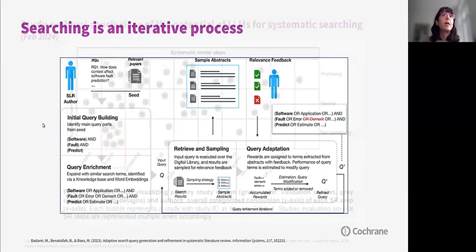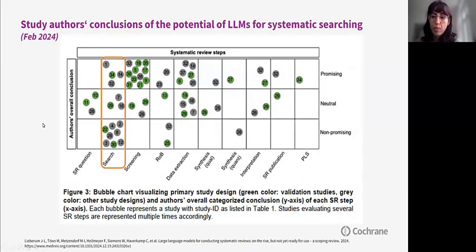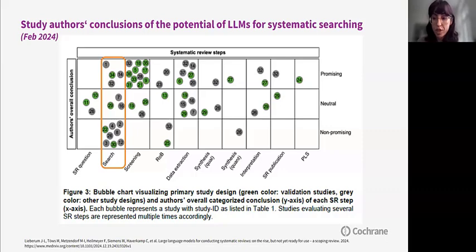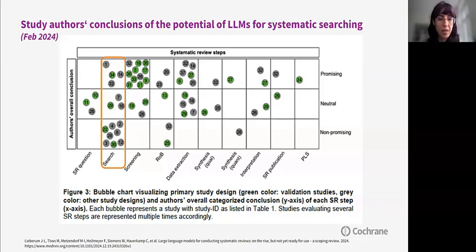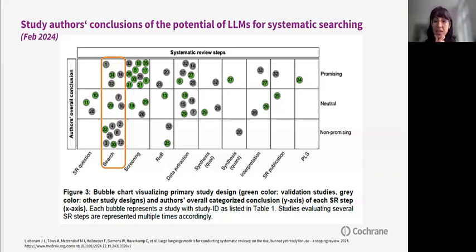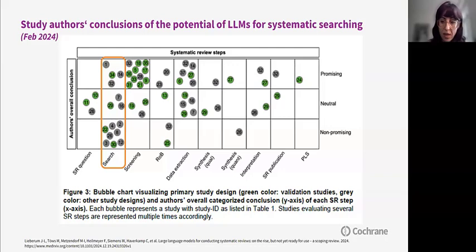This table is from a very recent scoping review led by the Freiburg Cochrane Germany team, published recently as a preprint. It provides an overview of studies assessing LLM support for systematic review tasks, categorized according to their conclusions: whether the LLM tool was promising, neutral, or non-promising. They identified a comparatively large number of studies assessing searching, and the majority concluded that LLM use is not promising in this context.